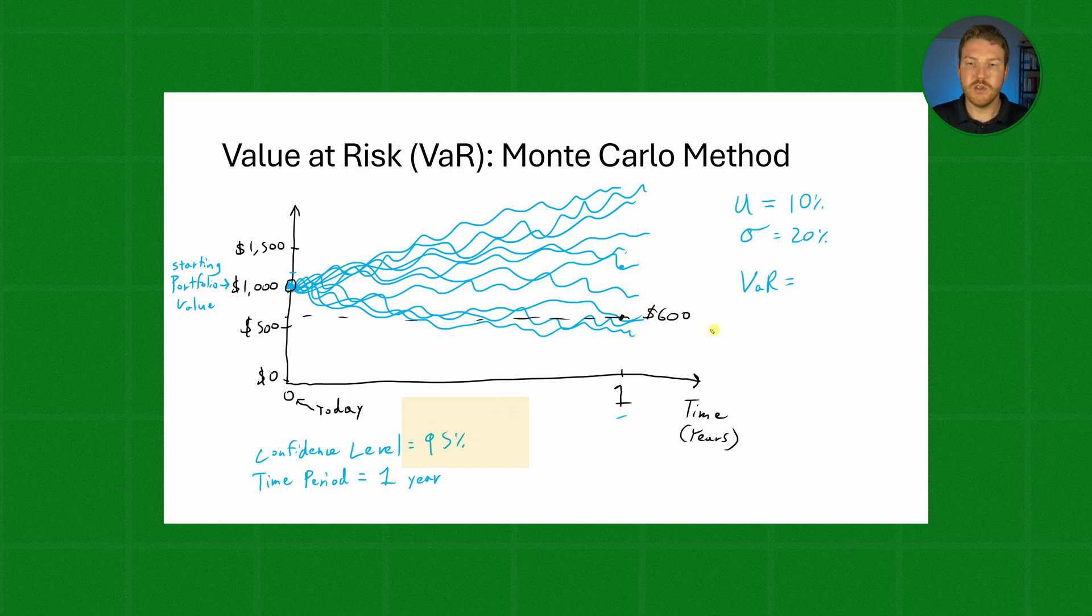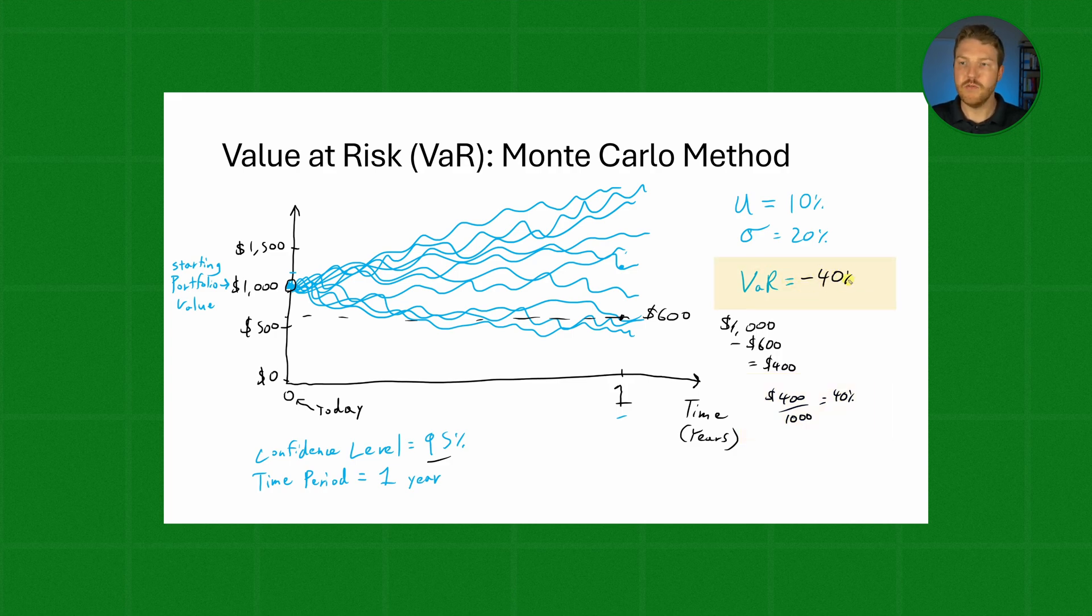Now we have this $600 at the end, so what would our VaR be? Well we actually lost, if we ended up with $600 and we started with $1,000, we actually lost a total of $400. And so if we lost $400 out of our original $1,000, then we ended up with a 40 percent loss at that 95th percentile worst outcome, which means that our VaR in this case would be a negative 40 percent.